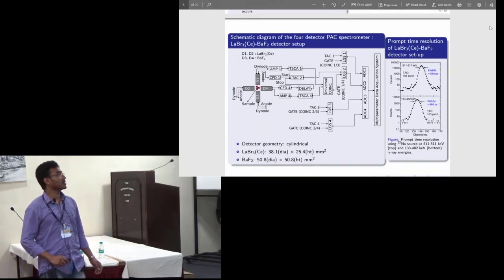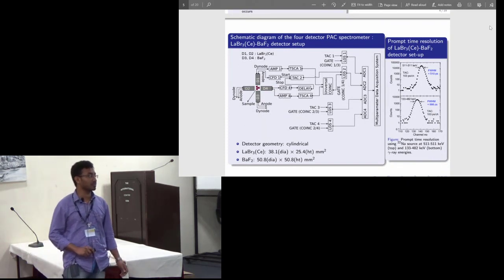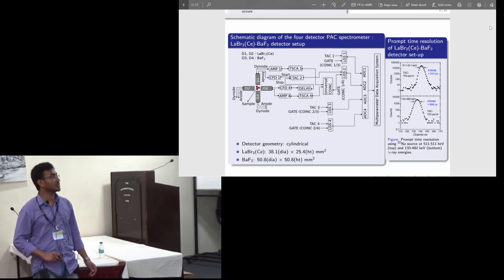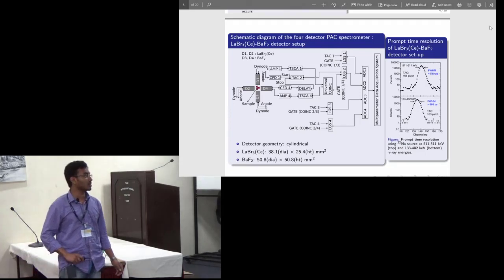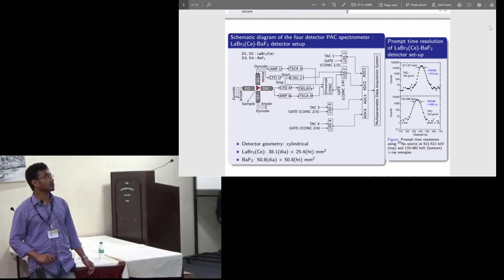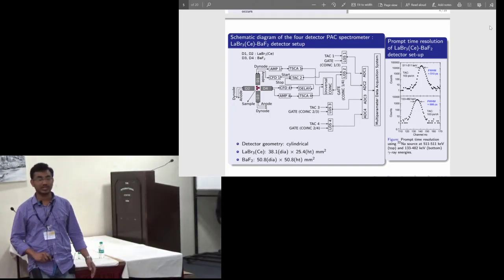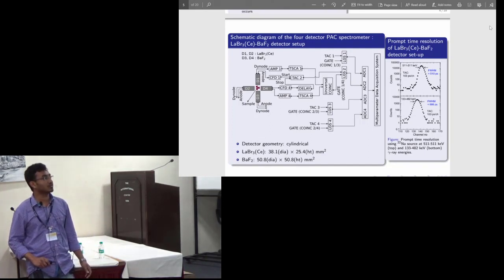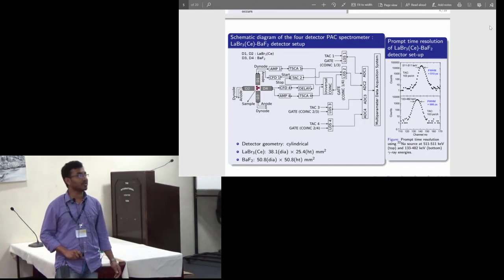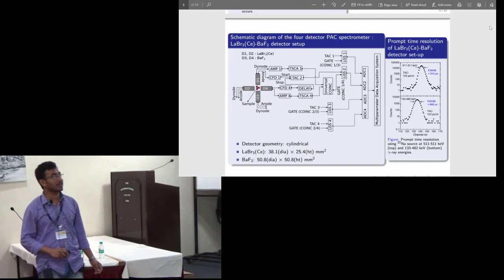This is the PAC spectrometer we have used. Four scintillation detectors: D1 and D2 are the LaBr3 scintillation detectors and D3 and D4 are the BaF2 scintillation detectors. We have built 4 coincidences, 2 at 90 degrees and 2 at 180 degrees, and this is a slow-fast coincidence circuit. We obtained 666 picosecond time resolution at hafnium energies using sodium annihilation gamma rays, and with sodium window selection the time resolution is 510 picoseconds.